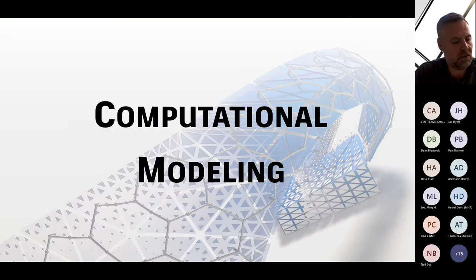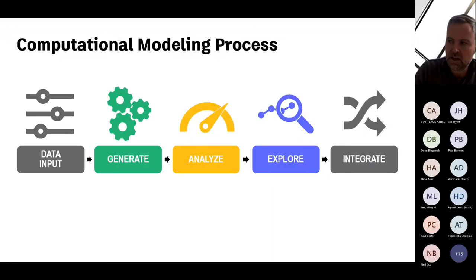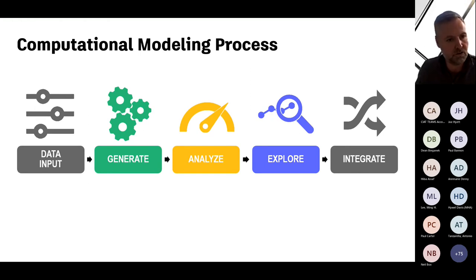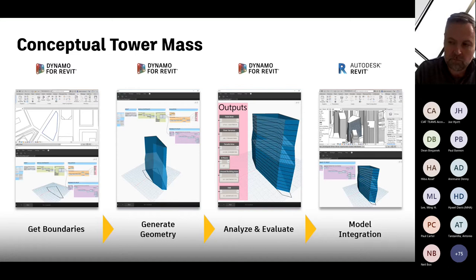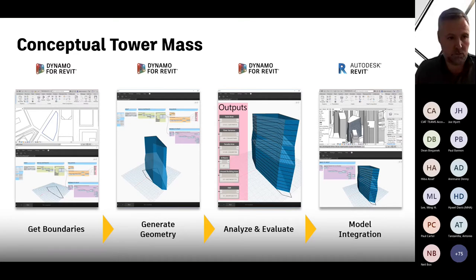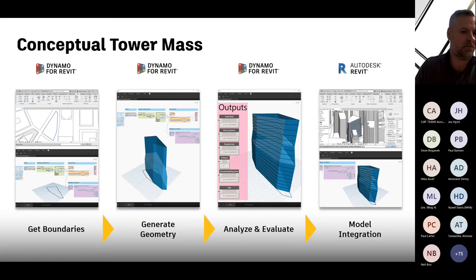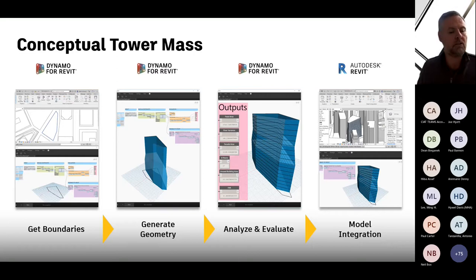That was design automation. The third technique within parametric design is computational modeling. This process is a bit longer — it gathers data, generates a model from it, which gets analyzed, and from those analysis results we explore all the solutions and then integrate it into our model. So we are actually manually generating multiple options. For our tower, that would mean getting the boundaries from a Revit model, getting the site conditions, generating geometry developed in a Dynamo script. The third step is analyzing the results — what is the facade area, what is the rentable floor area, how high is the building, what is the FAR ratio. Finally, we integrate it into our BIM model.